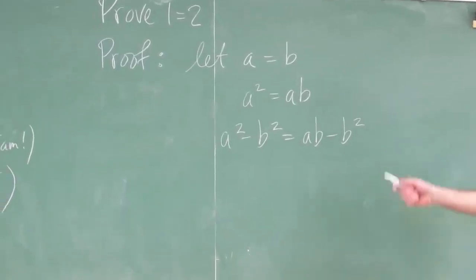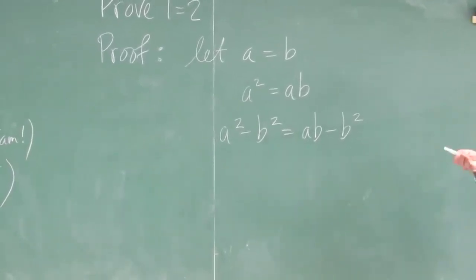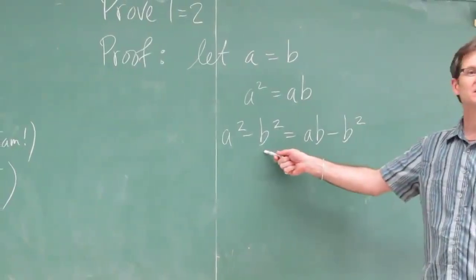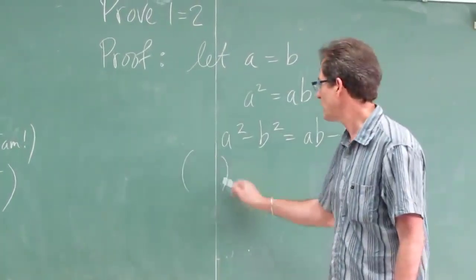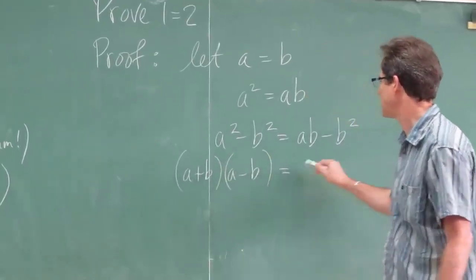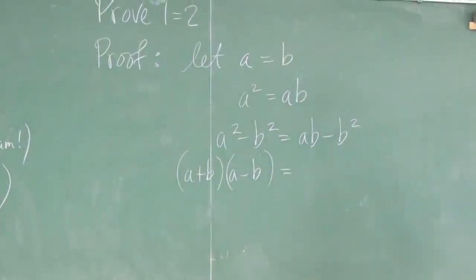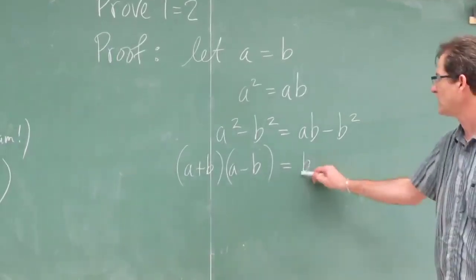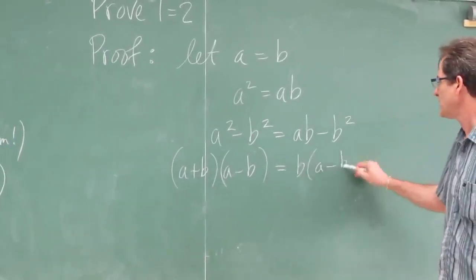Then, you can factor both sides by a different method. Left-hand side, difference of squares. So what do you get? A plus b times a minus b. On the right-hand side, you can factor by factoring out b. And you get a minus b.